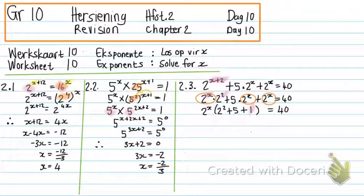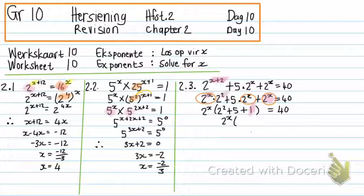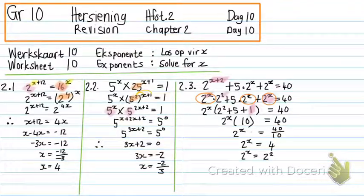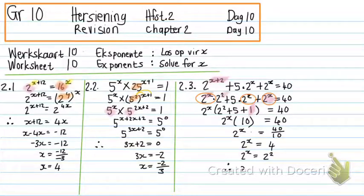The 1 appears because when I take the whole term out as a common factor it's like dividing, so a 1 remains. That gives 2 to the power of X times 10 equals 40. To get rid of the 10, I divide both sides by 10: 40 divided by 10 is 4. So 2 to the power of X equals 4, which is 2 to the power of X equals 2 squared. Making the bases the same, I can work with just the exponents: X equals 2.